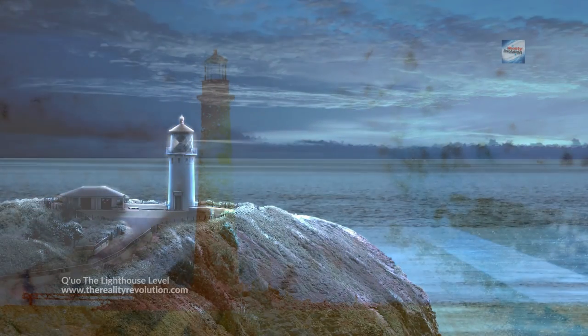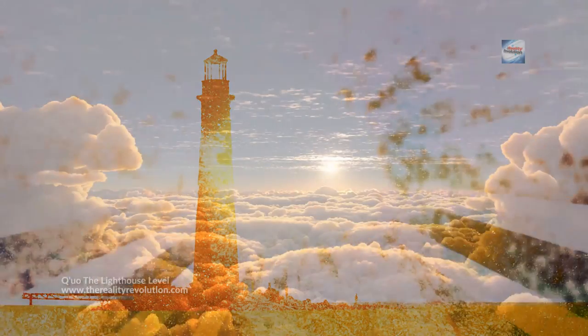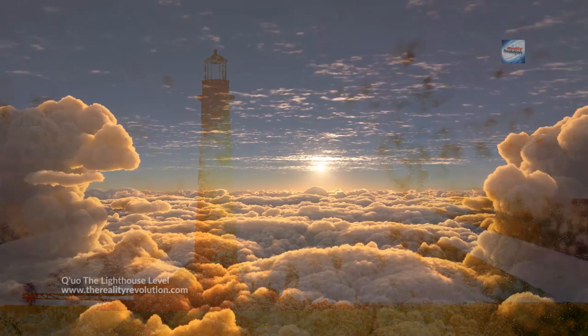In this episode we look at the indigo and violet rays of the energy body. We are looking at them together because in many ways they work together to create the player's interface with the enhanced game board. Before we talk about the indigo and violet rays separately, I would like to take a look in overview of these two energy centers.